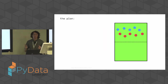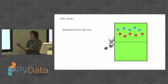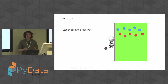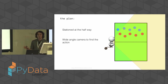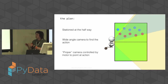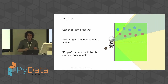The plan was to build a robot that would sit at the halfway point of the pitch — it stays there, it doesn't move. There are already systems out there that do automatic filming, but they require you to wear a tag on your ankle, and people don't like that. So I wanted the system to be completely passive. A wide-angle camera would film everything as input data, feeding into the model to control a proper camera attached to a servo motor that would follow the action.